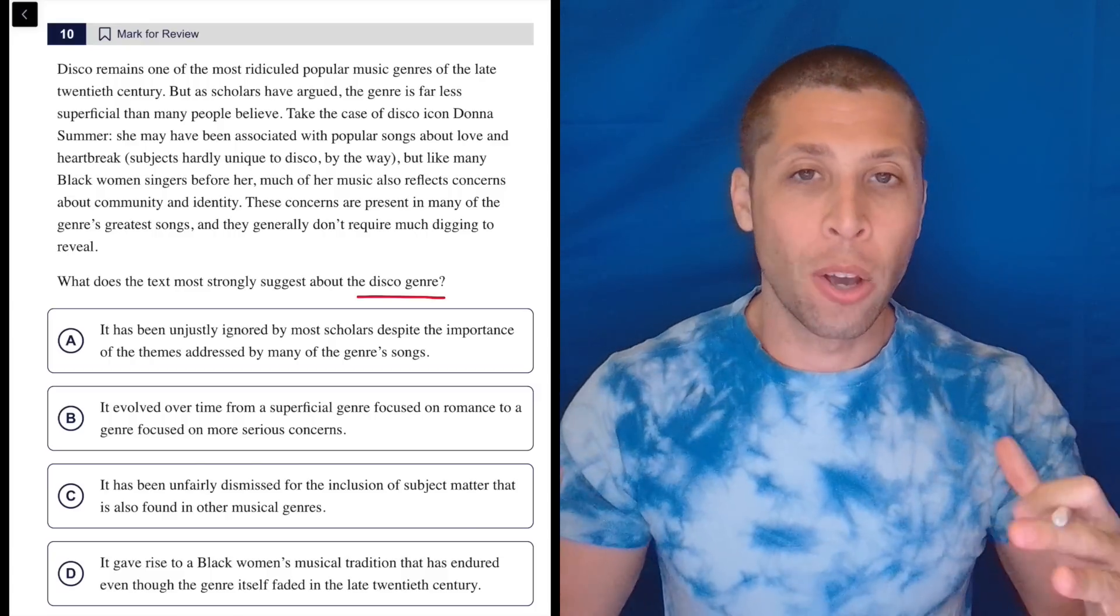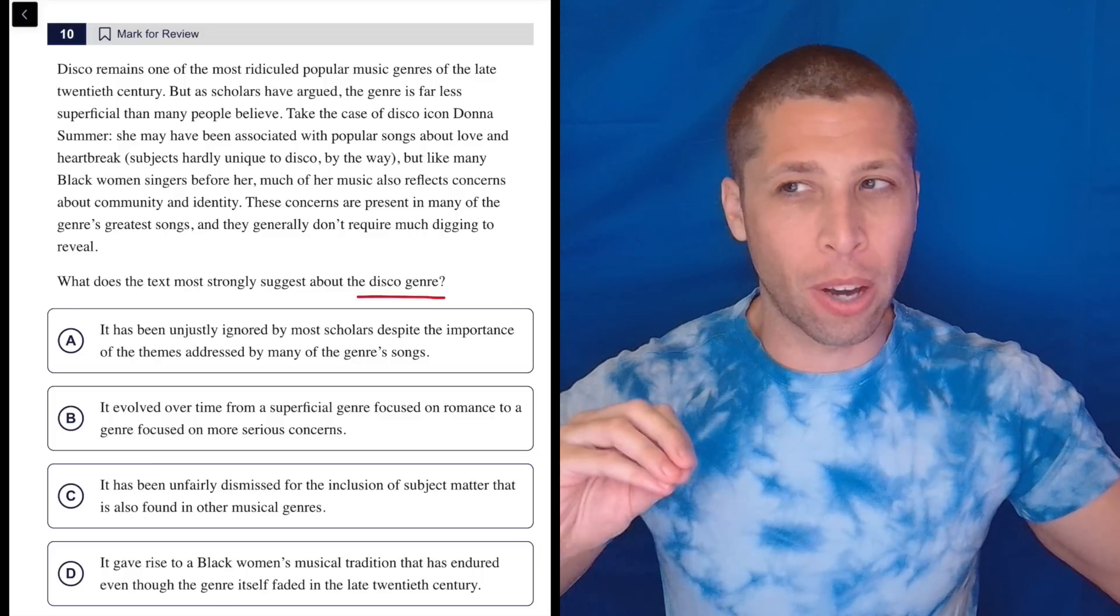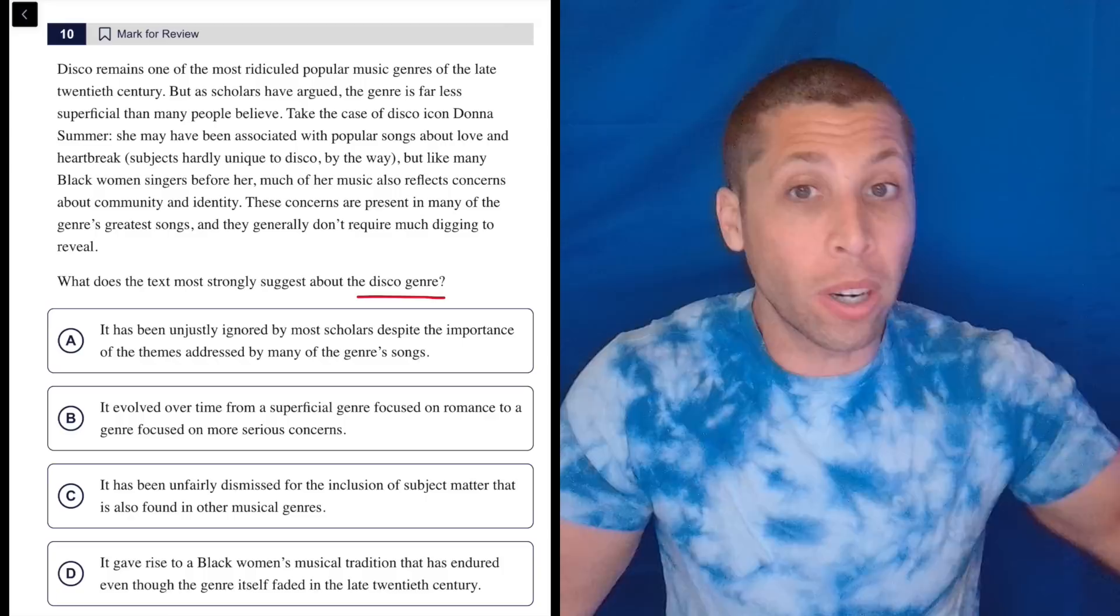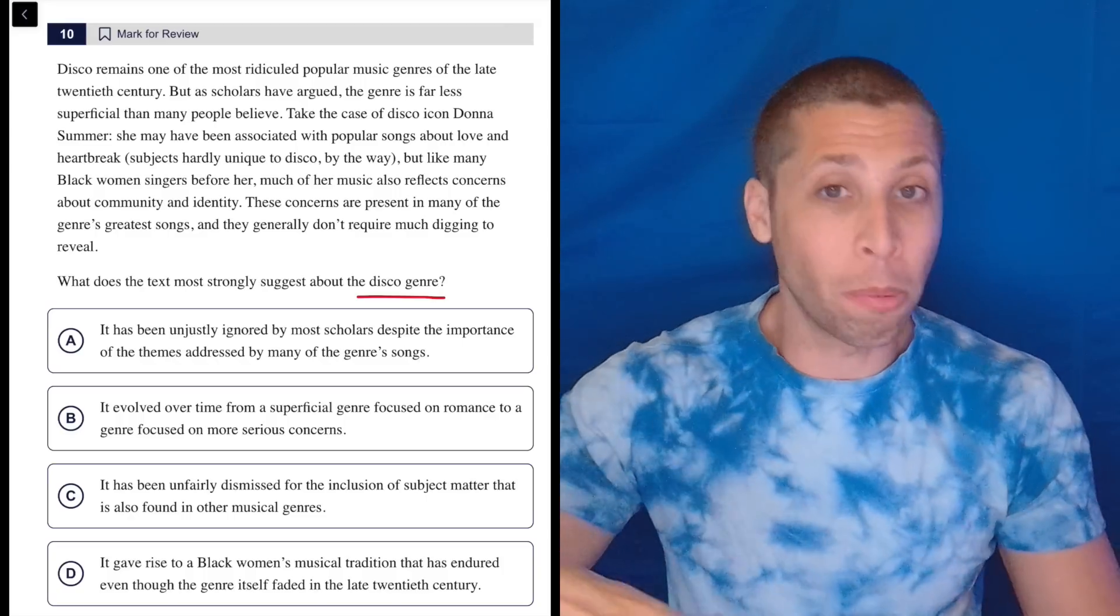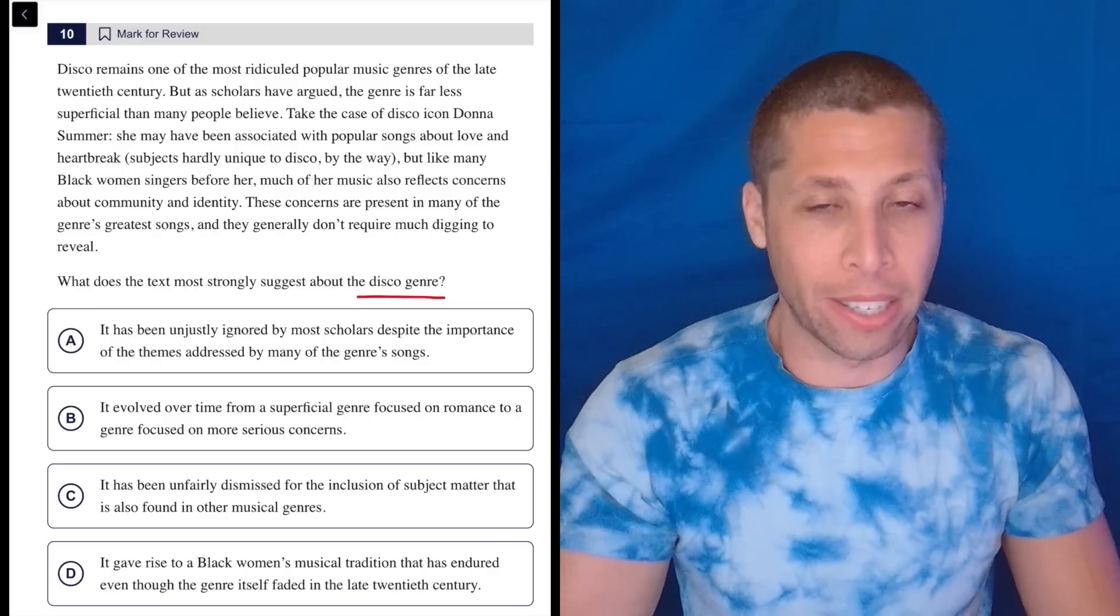So you can't panic when the wording of the question is different from what you've seen on your practice test, because they can ask the same exact things just using different words by tailoring it to the passage. Normally they would just say what's the main idea? Here, they're just kind of saying what's the main idea about disco? So it's all the same.